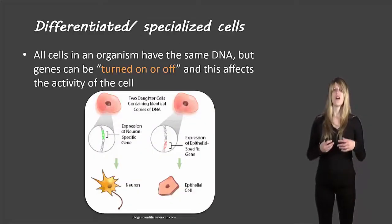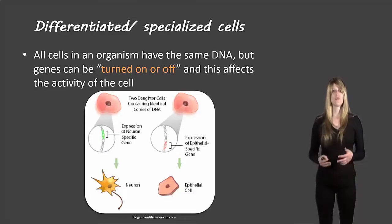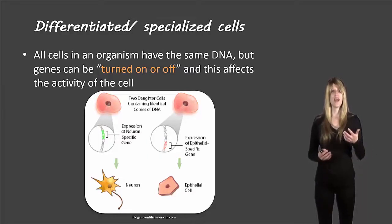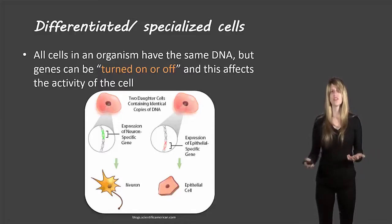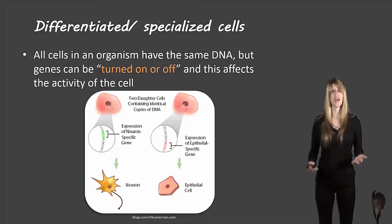First of all, all cells in an organism have the exact same DNA. So why is it that different cells look differently from each other? Why is it that a red blood cell looks a certain way and a nerve cell looks a different way? Or an epithelial cell, which is like a skin cell — why does that look a different way?